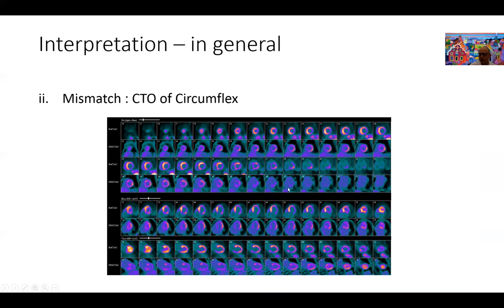This is a patient with CTO of the circumflex coronary artery who comes in with a defect in the lateral wall as you can see right here. Before we proceed to opening that CTO, we do FDG images as you can see in the bottom images here, and you can see that lateral wall picks up FDG beautifully in the short axis, horizontal long axis, vertical long axis, indicating hibernation in those segments.